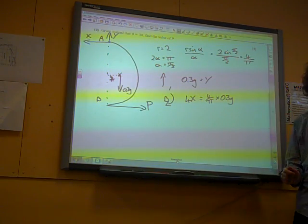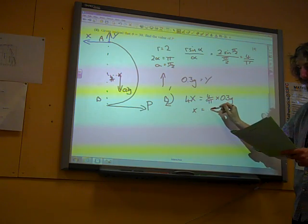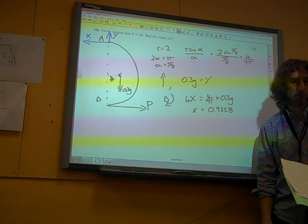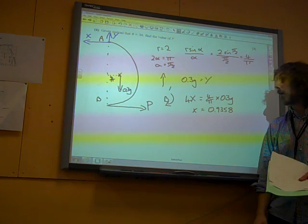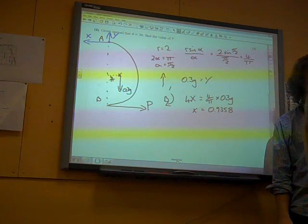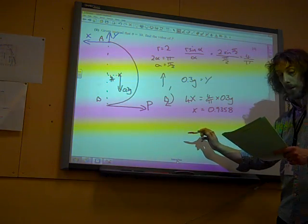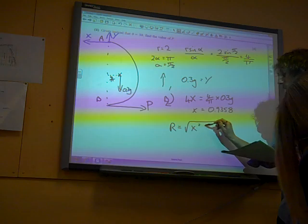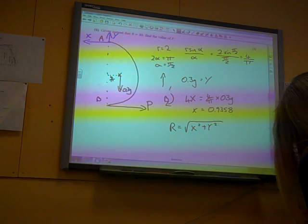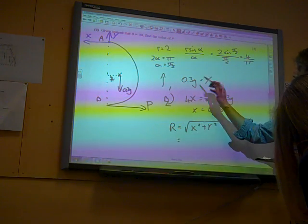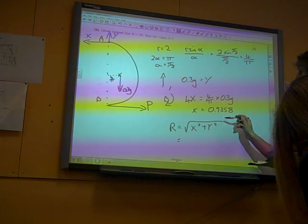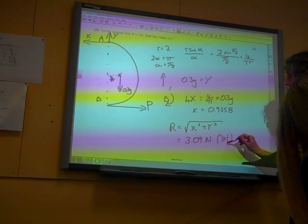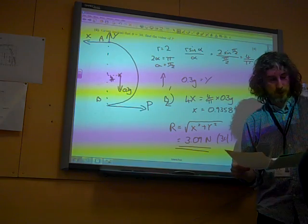So we get X. I did actually just work this out on the calculator. X comes out as being 0.9358. We've got X and Y. We wanted to find the magnitude of the force at the thing. So what we do now is the resultant force would be the square root of X squared plus Y squared. And if we do that, 0.3g squared plus 0.9358 squared square rooted, we get 3.09 newtons. That's how I would have done that question.